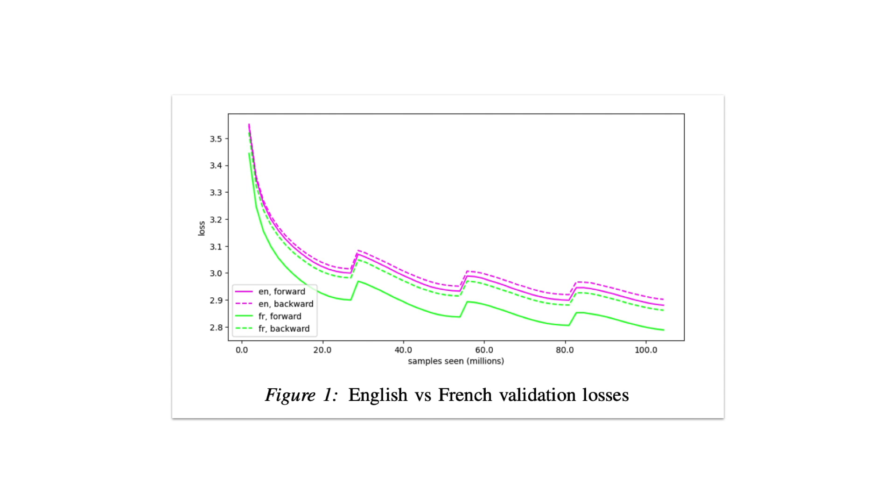Here we see the validation losses for the four models during training. French is green, English is magenta, and the solid lines show the forward model's performance while the dashed is the backwards models. After an initial period of similar loss in the very beginning of training, the backwards models get consistently greater loss than their forwards counterparts.